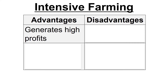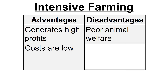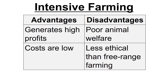For intensive farming, the advantage is high profits with low costs — animals are kept in one area, and land is cheaper to buy. Disadvantages really come down to animal welfare, which is going to be poorer than for free range. Related to that, it's less ethical. For example, eggs from caged hens may go out of fashion as animal welfare becomes more prominent in people's minds.